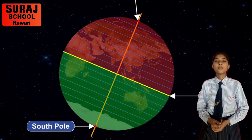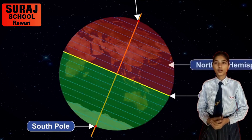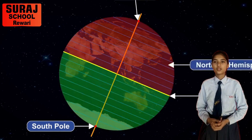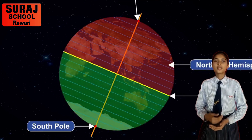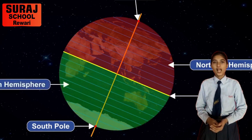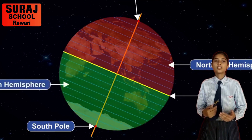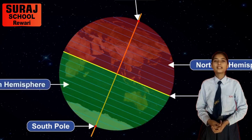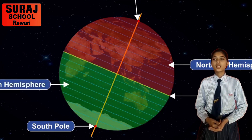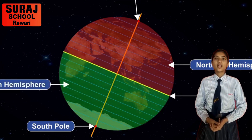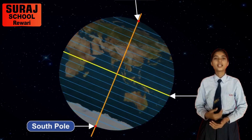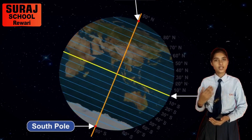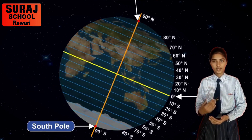Next is Meridians of Longitudes. A meridian is an imaginary semicircle that runs in the north to south direction and they all meet at the poles. The Prime Meridian is an imaginary line that divides our Earth into two other hemispheres: the eastern hemisphere and the western hemisphere.